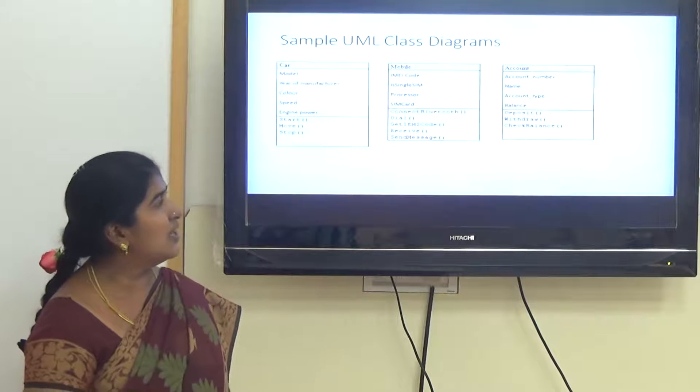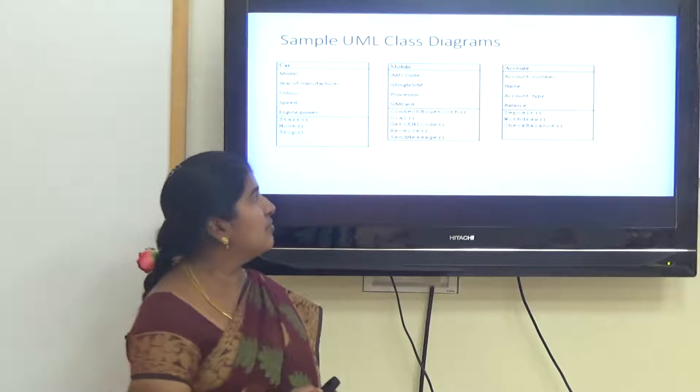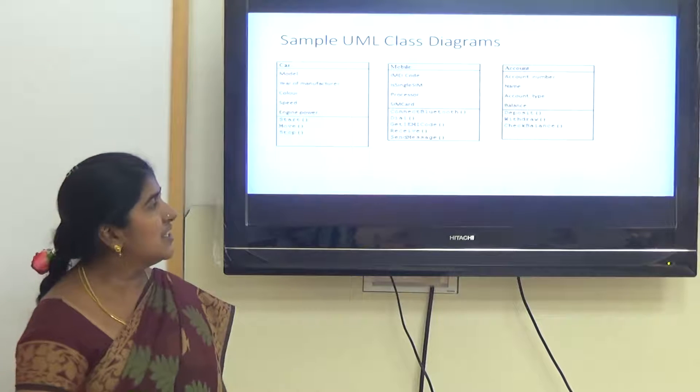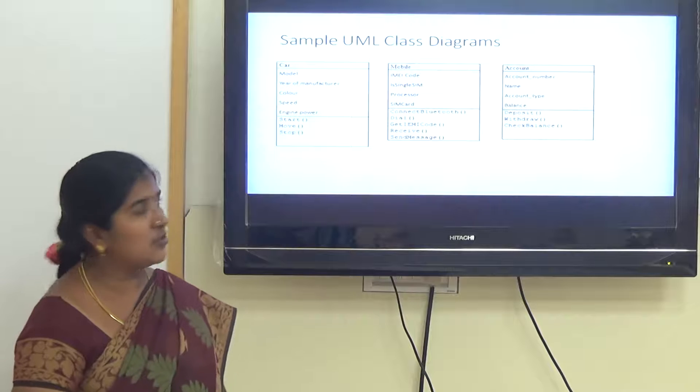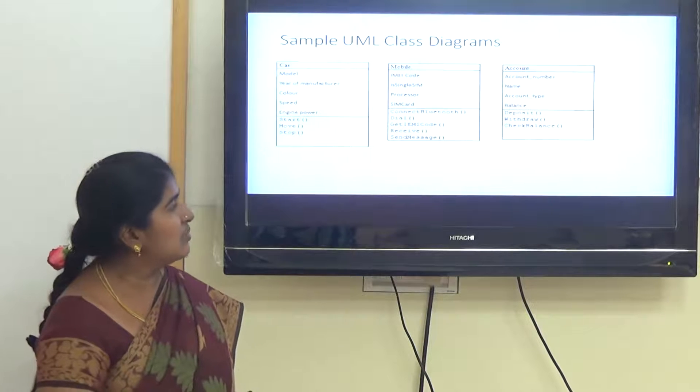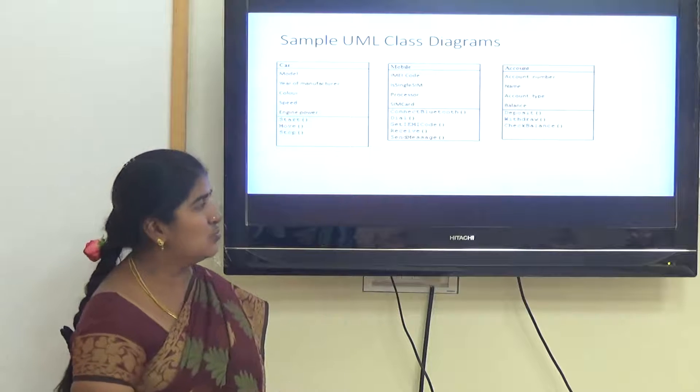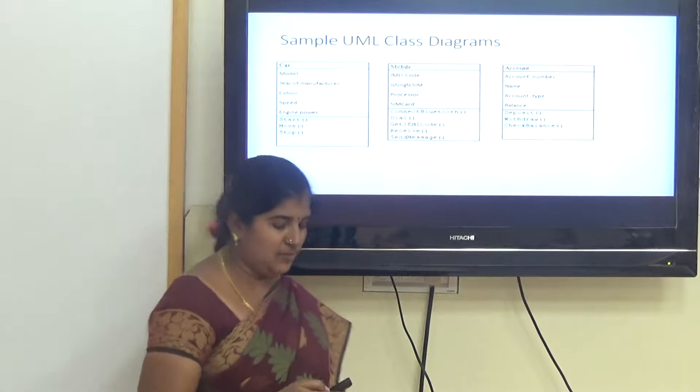For another object, mobile. A mobile can have IMEI, model, whether it is single SIM or not, processor, and SIM card. Behavior can be to dial, receive, and send messages.